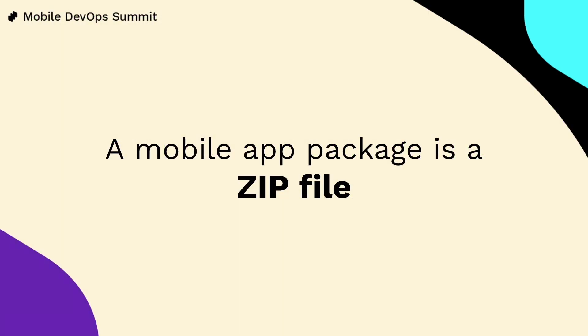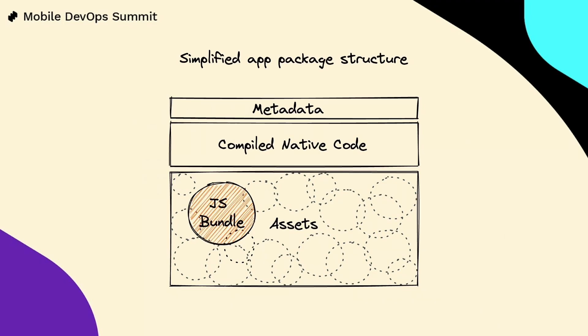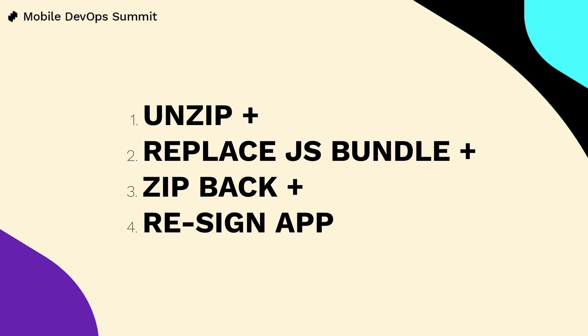It turns out mobile app artifacts are actually zip files — they just have different extensions: APK for Android and IPA for iOS. The classic React Native app package contains the compiled native code, some metadata, and many assets, including the JS bundle. We had to give it a try. We unzipped the app artifact, replaced the JS bundle, zipped it back — and it didn't work. But the good news is that it wasn't working because the signature had become invalid. So we tried resigning the app after the changes, and this time it worked. The app came back to life, and this was the moment we knew it was possible. Avoiding the native code compilation was no longer a dream.